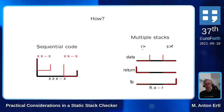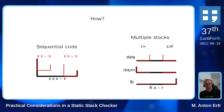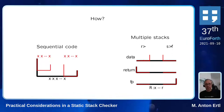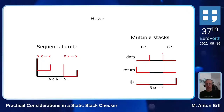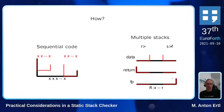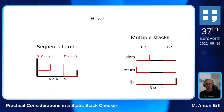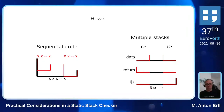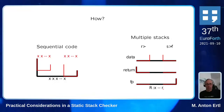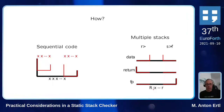If we have R> which pops a return stack item, we see a pop on the return stack and a push on the data stack. If we have S>F which pops a data stack item and pushes a floating point stack item, we see each separately. The total is computed per stack: no net effect on the data stack, a pop on the return stack, and a push on the floating point stack.